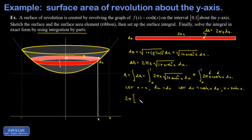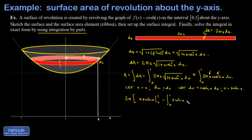Recalling that the derivative of sinh is cosh, the antiderivative of cosh is sinh, so v = sinh(x). The integration by parts formula gives us uv minus the integral of v du: that's x sinh(x) evaluated from 0 to 1, minus the integral from 0 to 1 of sinh(x) dx.